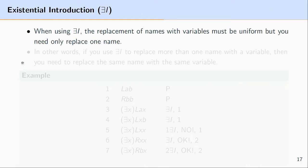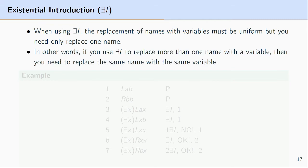There are a couple of extra things to know about existential introduction. The first is that the replacement of variables must be uniform, but you only need to replace one name. That is, if you're planning on replacing more than one name with an existentially quantified variable, you need to make sure it is the same name in each case. Let's look at an example.